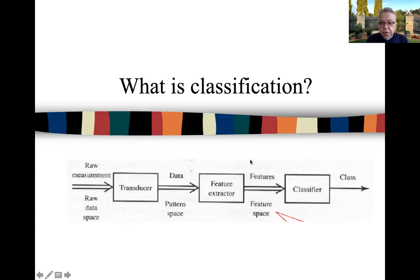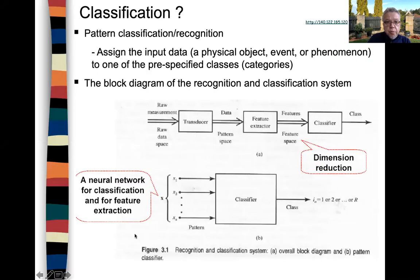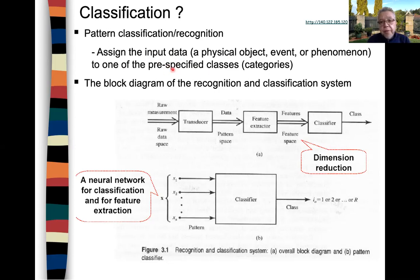Let's now look at the problem of classification and see how we can link this to discriminant functions — how to define a discriminant function for classification. The problem of classification is to assign the input, a physical object, event or phenomenon, to one of the pre-specified categories or classes. The block diagram of the recognition system or classification system is as follows.